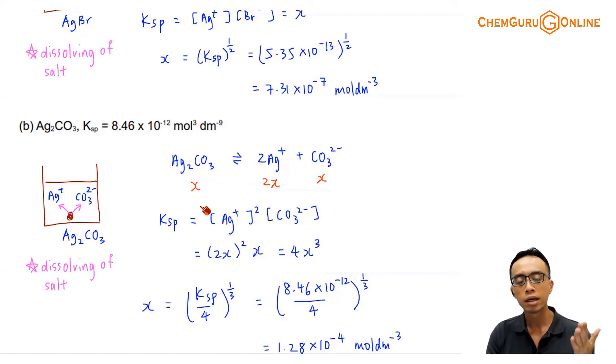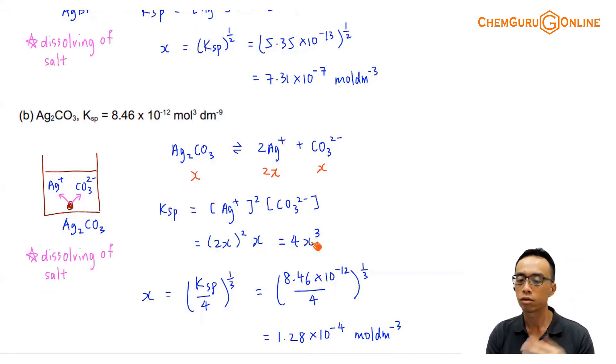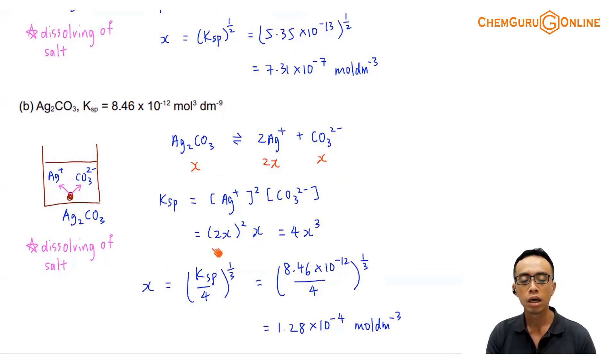So I can simplify this, my Ksp will be 4X to the power 3. So therefore I can solve for X as well, no issue with that. X will be Ksp divided by 4 to the power 1 third, so this one is a cube root. And I can solve for my solubility, my X, 1.28 times 10 to the power of minus 4.